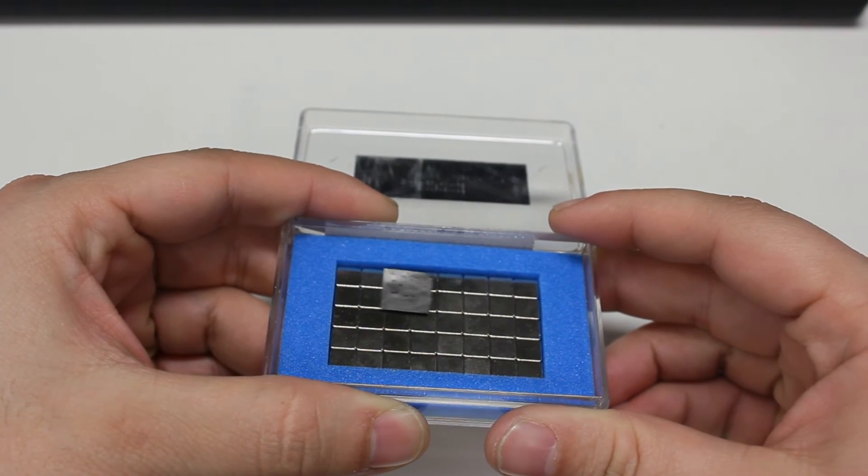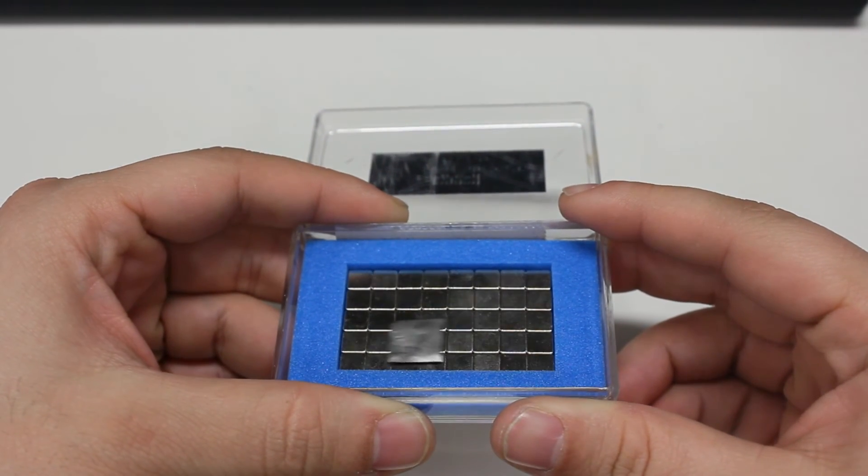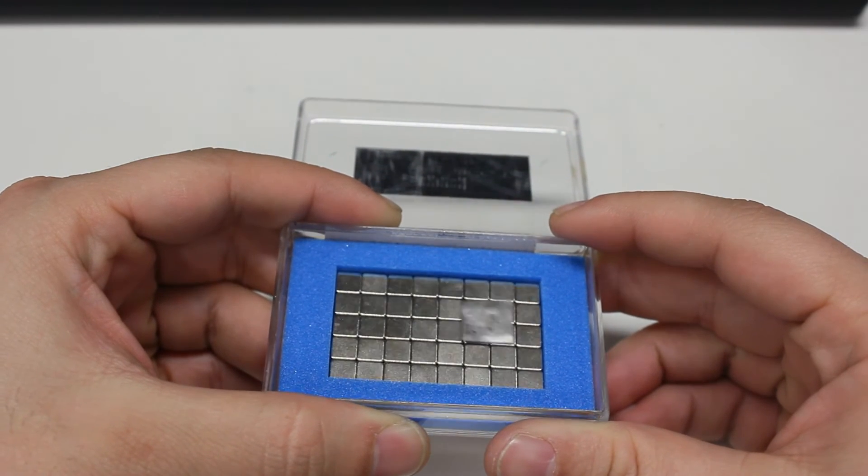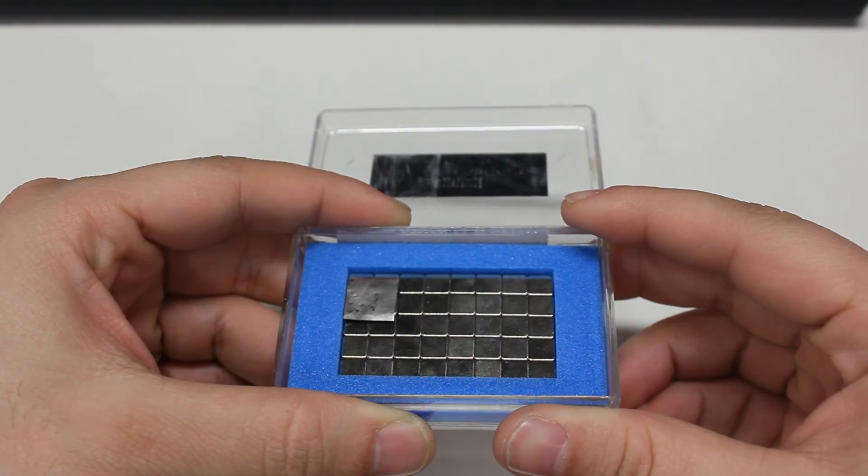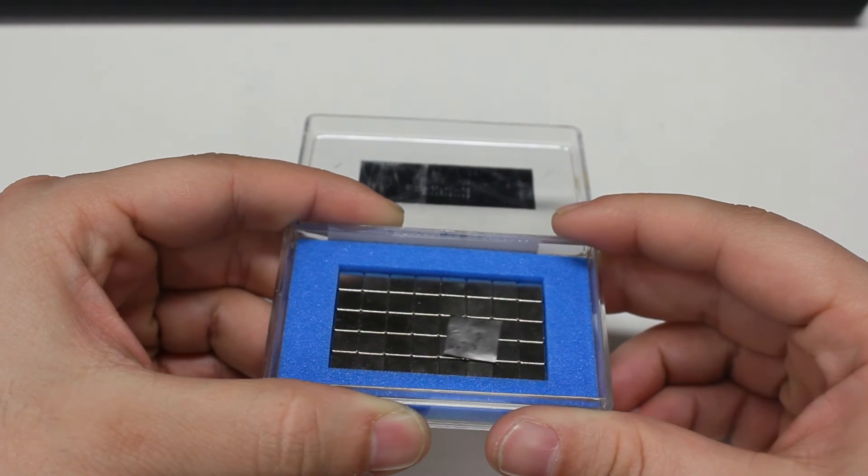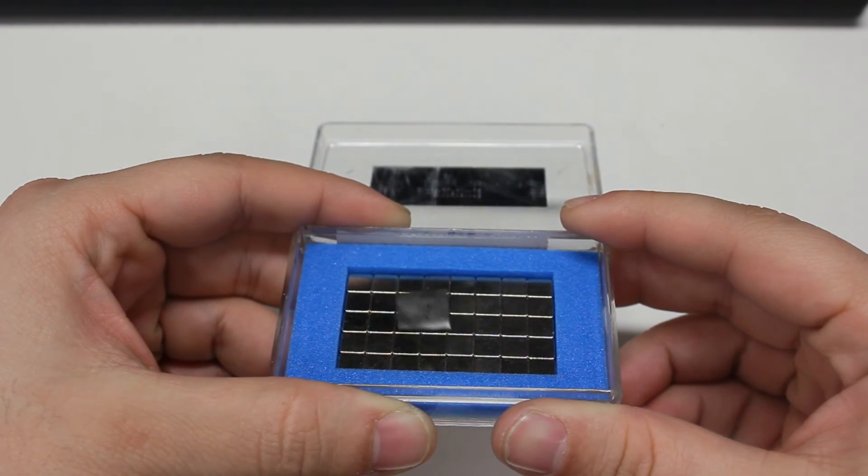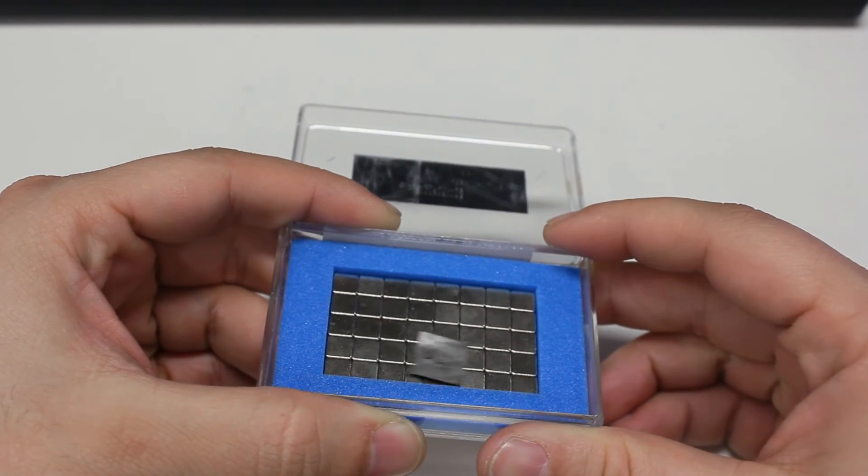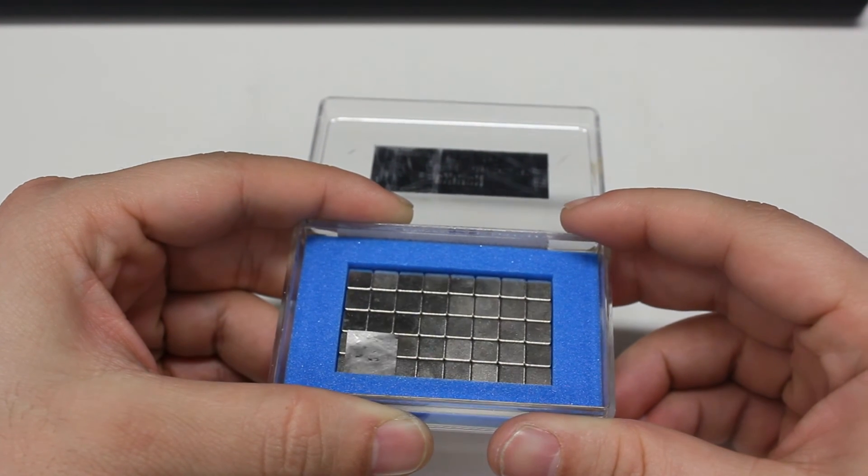However, if we use a different material, it is possible to achieve very good performance using this levitation principle. There is a special class of materials called superconductors and they can be very useful when we think about diamagnetic levitation.